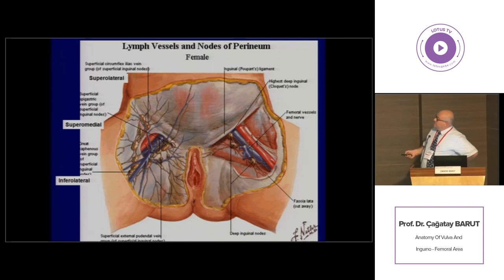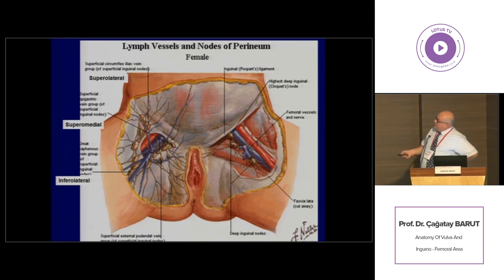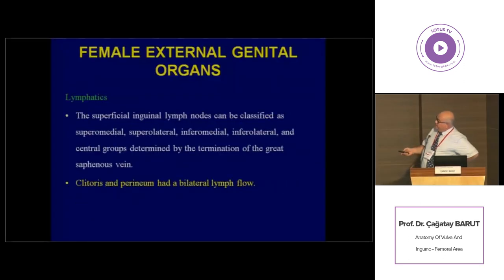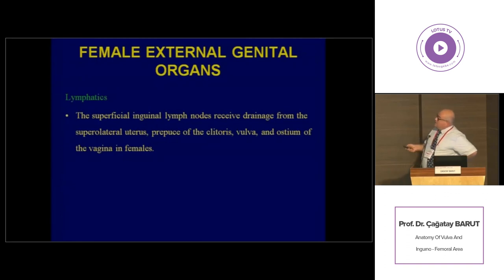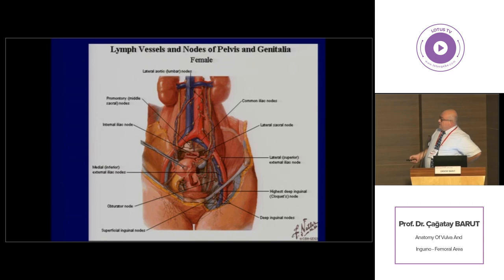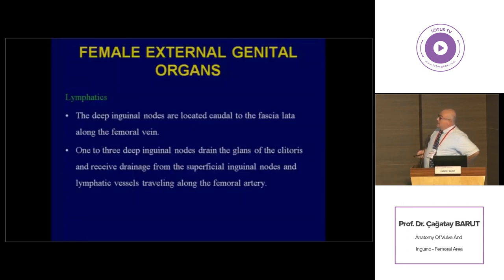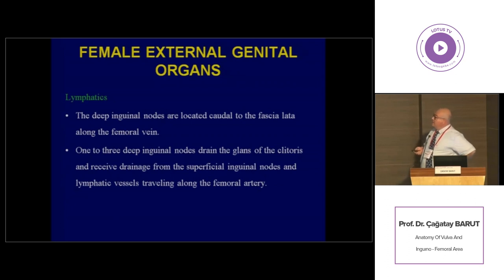Here we can see the placement of the supermedial group, and the superlateral group is placed around here. The inferolateral group is also shown. The superficial inguinal lymph nodes mainly receive drainage from the superlateral uterus, prepuce of the clitoris, vulva, and ostium of the vagina. After receiving these lymphatics, they drain into the deep inguinal lymph nodes, which are placed deep to the fascia lata, and then finally drain into the external iliac lymph nodes. In addition, the deep inguinal lymph nodes further receive the lymph of the glans of the clitoris.